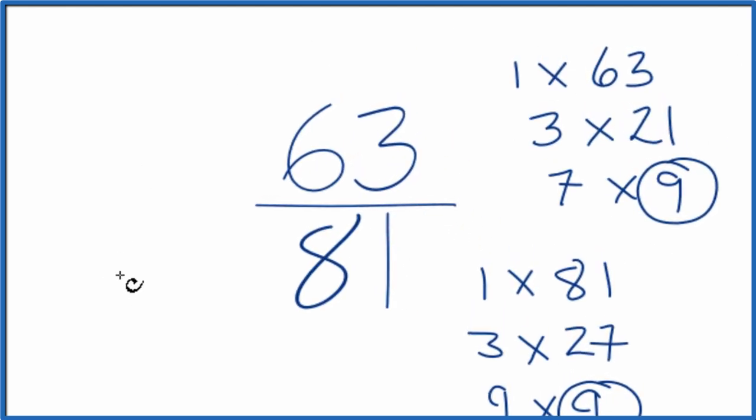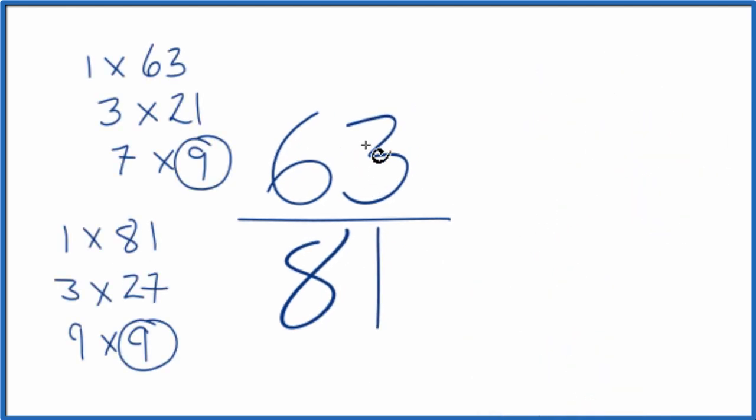Let's move these over here. 63 divided by 9 equals 7, and 81 divided by 9 is 9, and we've simplified 63 over 81 down to 7 over 9.